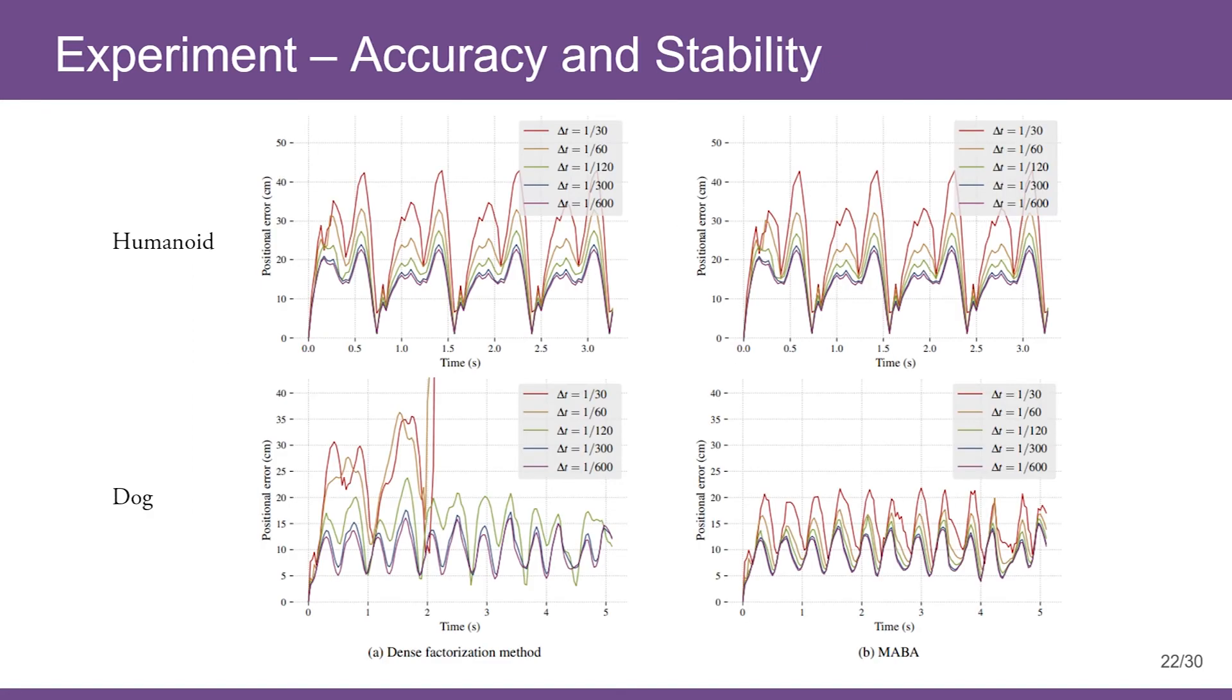We compare stability of different SPD implementations by the same quasi-physics tracking task. The following figures show SPD tracking error under different models and time steps. Tracking error is measured by relative distance from root to one of the end effectors. From this figure, we can see that DF and MABA show nearly equal stability on humanoid model for all tested time steps.